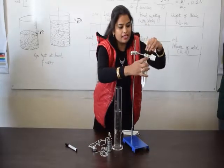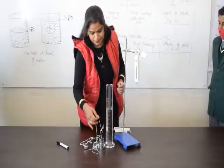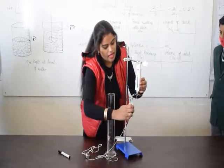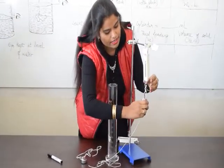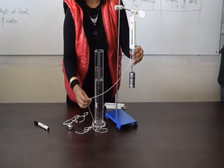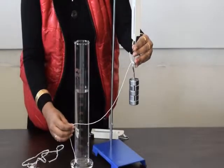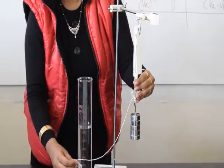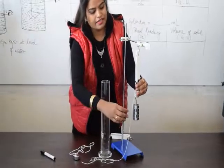First of all we will hang this spring balance and we will calculate the weight. Initial it is zero. And final, no doubt of reading? Can you tell me Harshika? Readings? Ma'am 4 Newton and 400 gram. Okay. 400 gram or 4 Newton.